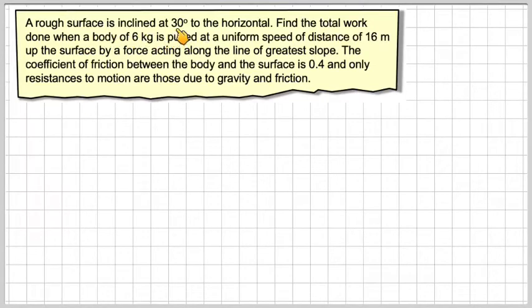A rough surface is inclined at 30 degrees to the horizontal. Find the total work done when a body of six kilograms is pulled at a uniform speed for a distance of 16 meters up the surface by a force acting along the line of greater slope.